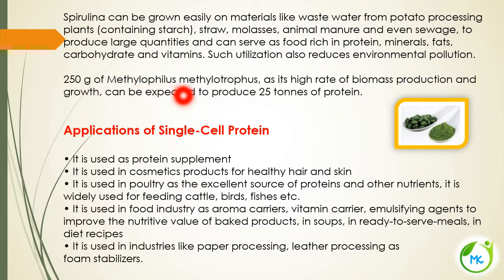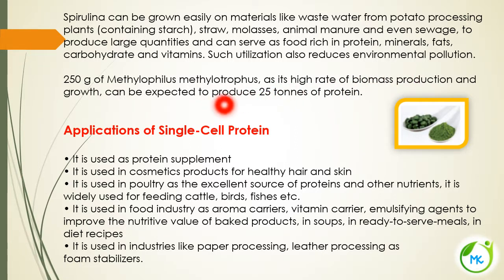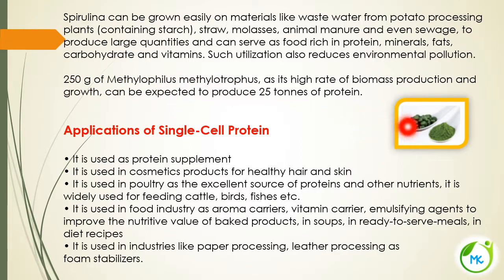250 grams of Methylophilus Methylotrophus — the bacteria employed for SCP production — has a high rate of biomass production. That is, 25 tons of protein is expected to be produced using just 250 grams of Methylophilus Methylotrophus. This picture shows Spirulina SCP.